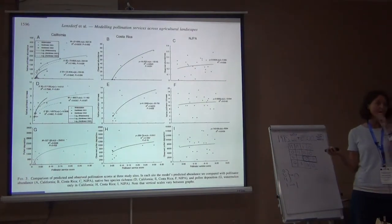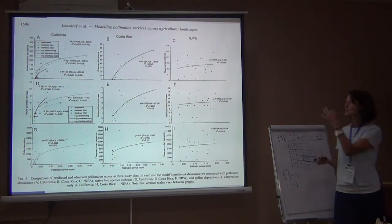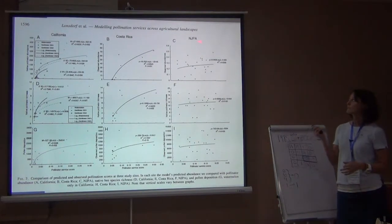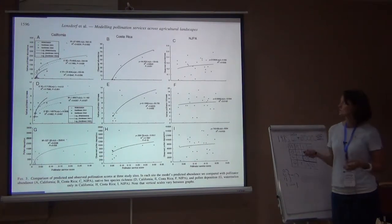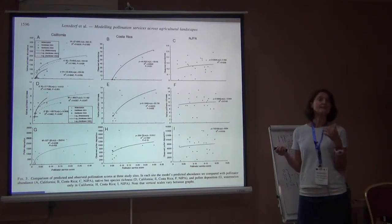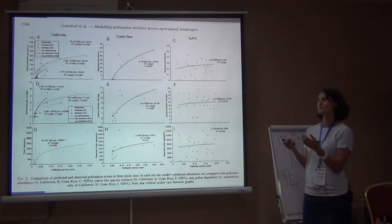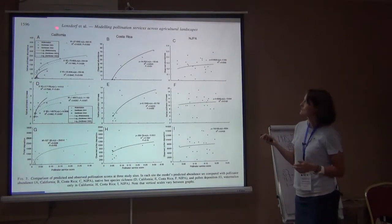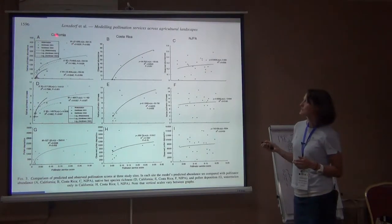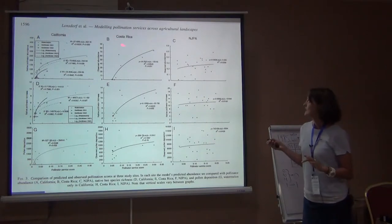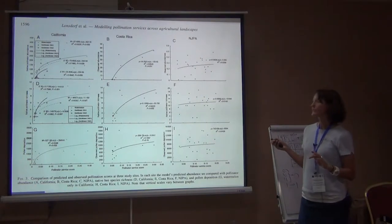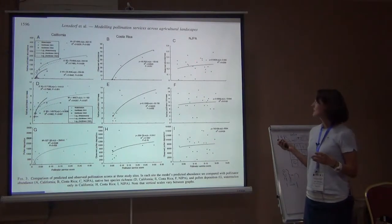So this was the seminal paper that did this, and they actually went out in three different places and collected those data. So in this column, you have the data for California — the maps I was showing you, Yolo County. Here you have data from Costa Rica, and here you have data from New Jersey and Pennsylvania.